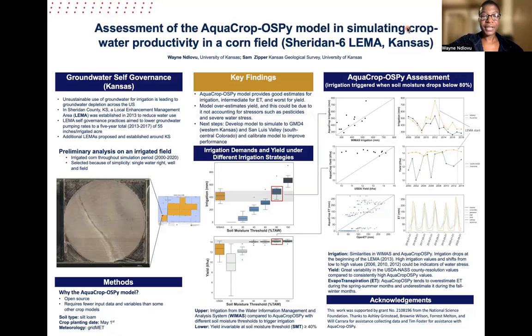A lot of irrigated lands rely on groundwater as a source, but unsustainable use of groundwater for irrigation is leading to groundwater depletion across the U.S. and in other parts of the world.